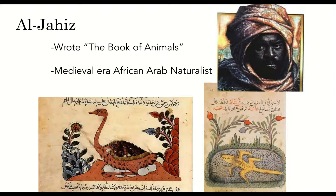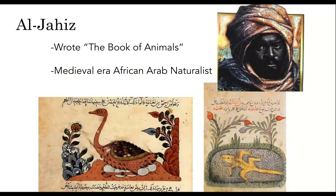The author of those words, Uthman al-Jahiz, was a medieval African Arab naturalist who wrote on topics including Arabic grammar, zoology, and poetry. He lived nearly 1,000 years before Darwin. And while it is unlikely that Darwin read his work, Al-Jahiz's writings are the reason why many people say that the origins of evolutionary theory lie in the Islamic Golden Age — a period of cultural, economic, and scientific flourishing in the history of Islam.